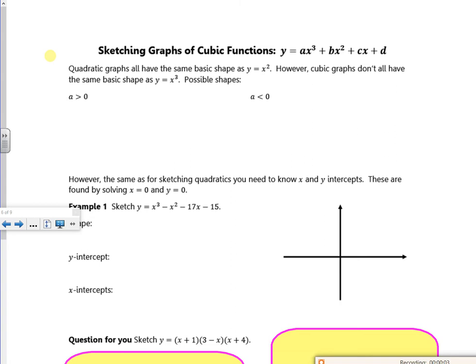Hi, this is the second lesson on graphs of inequalities and cubics. Quadratic graphs all have the same basic shape - U or upside-down U. However, cubic graphs don't always look the same.